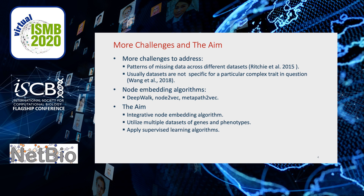However, there are more challenges to address. There might be patterns of missing data across different datasets that cannot be avoided by integrating multiple datasets. And usually datasets are not specific for a particular complex trait in question, such as protein-protein interaction. Node embedding algorithms are promising to address those challenges by allowing statistical learning algorithms to be applied to networks by generating node features based on the network structure. But these existing algorithms can't utilize the multilayered heterogeneous network structures.